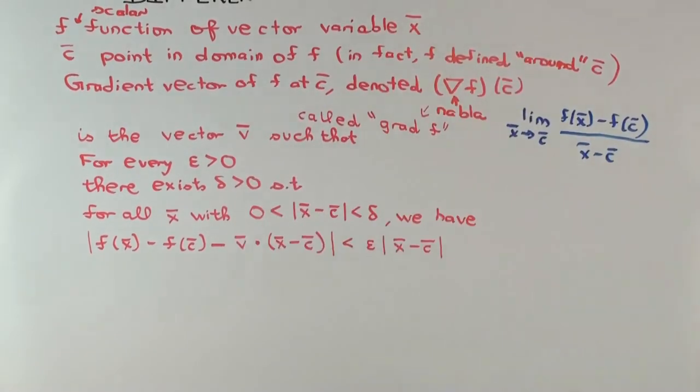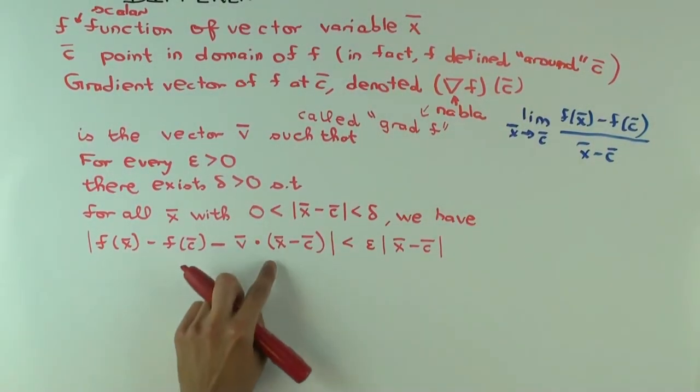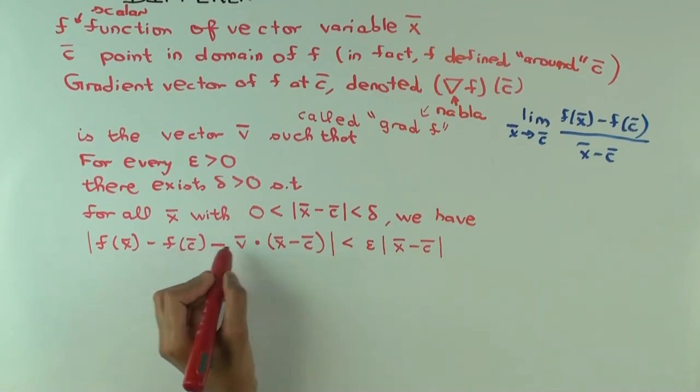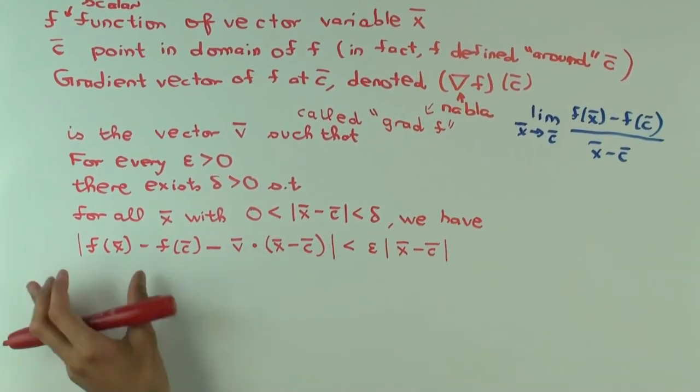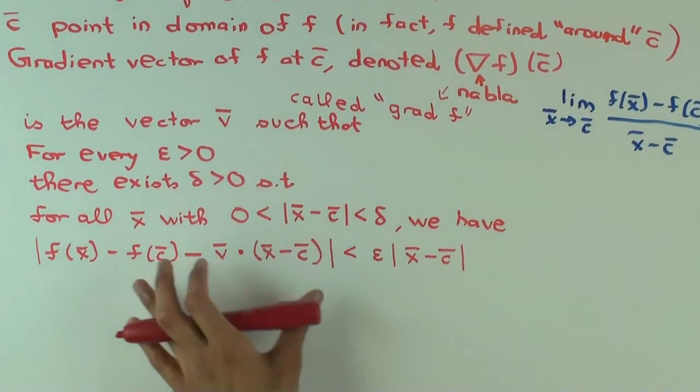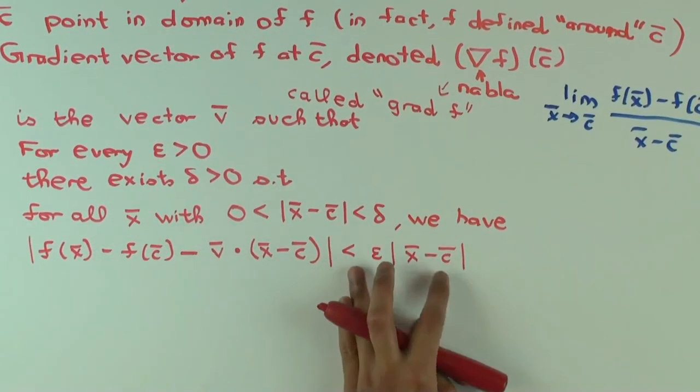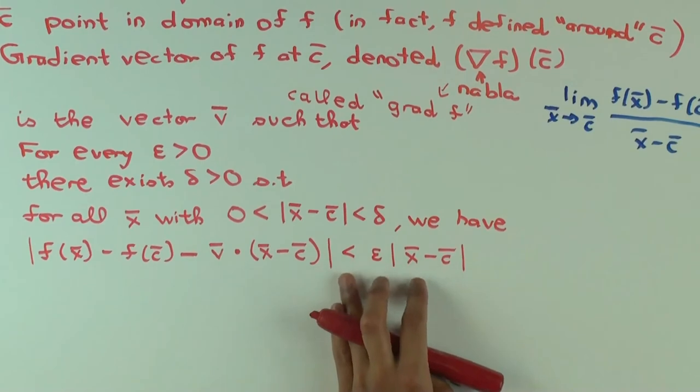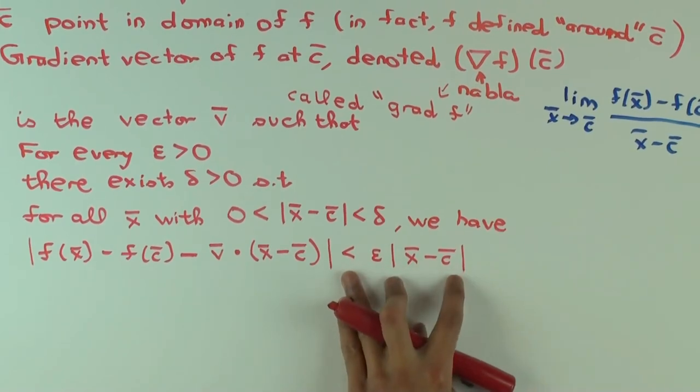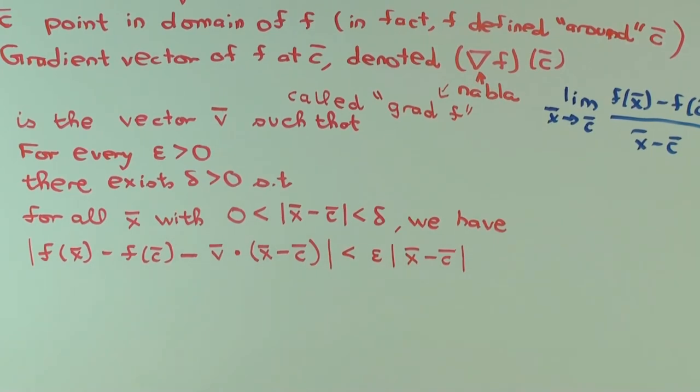So, now that we have this, let me just say a bit more. So, on the left side, all these things are scalars. So, f(x) is a scalar. f(c) is a scalar. v dot (x minus c) is also a scalar. You're subtracting, and then you're taking the absolute value. On the right side, x minus c is a vector. You're taking the length of the vector, and then multiplying by epsilon. Can we do that?